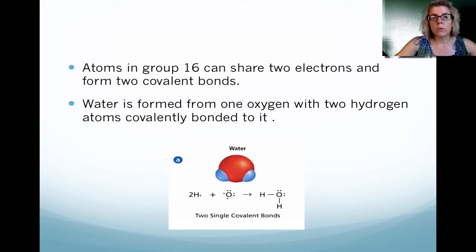If you go to group 16, one over from group 17, notice that they have six valence electrons. Oxygen, which is found in group 16, because it has two empty spaces, it would like to have two more electrons. As a result, it forms two covalent bonds, such as water.